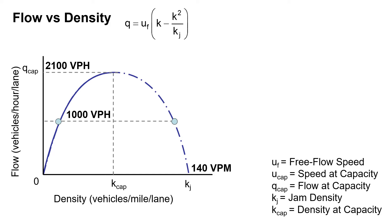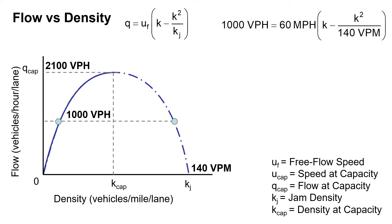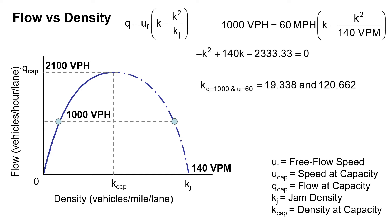We're going to use our equation where the flow is equal to our free flow speed times the density minus the density squared over the jam density. Plugging in the values we know: 1000 vehicles per hour equals 60 miles per hour times k minus k squared over 140 vehicles per mile. Rearranging this, we end up with negative k squared plus 140k minus 2,333.33. We're going to have two values for this because we have that quadratic, so k equals 19.338 and 120.662 vehicles per mile.